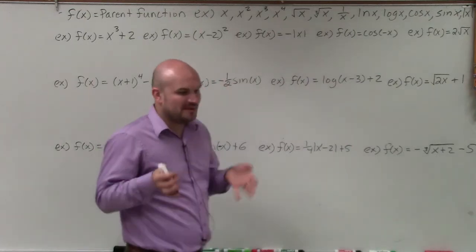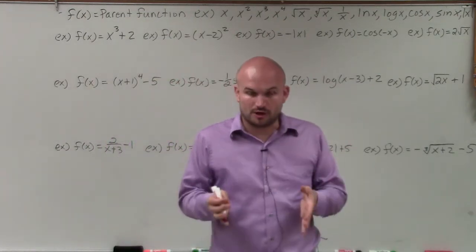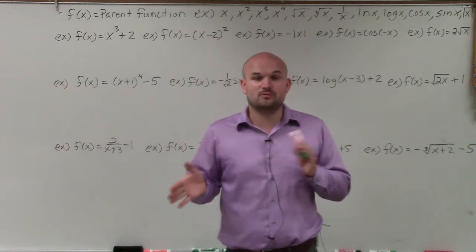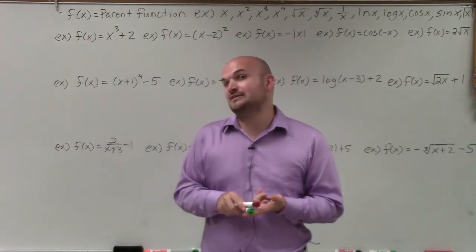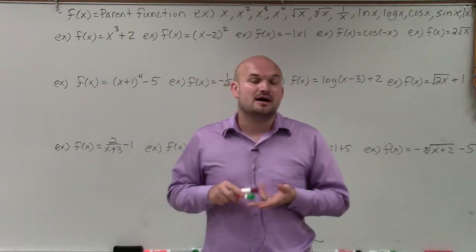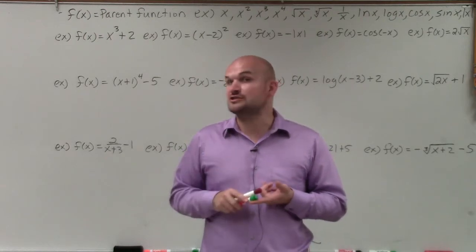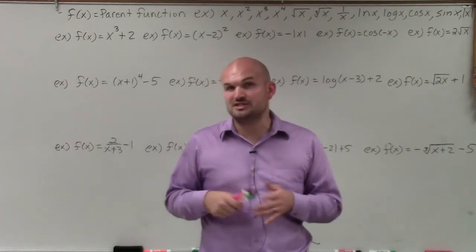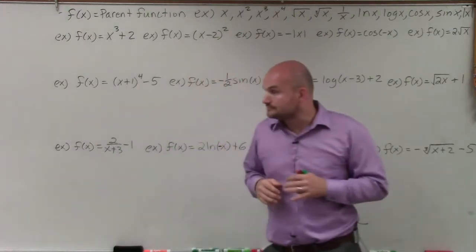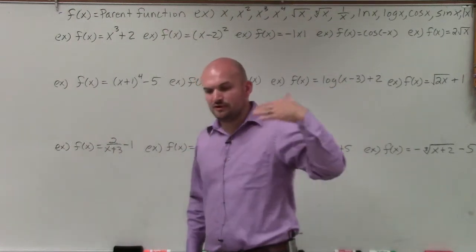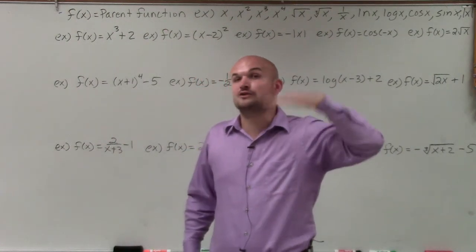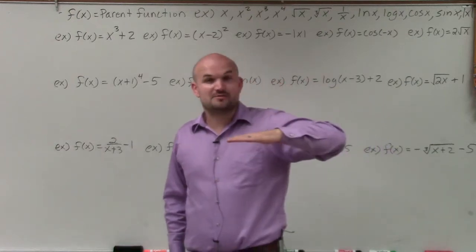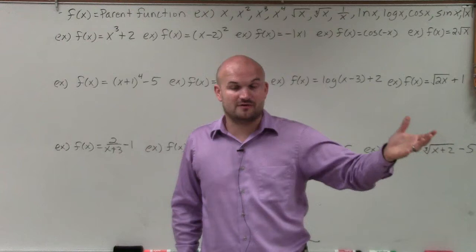Basically, if you remember from our last video, depending on where the values are inside of our function, that determines what type of transformation we have. We could have a horizontal transformation, a vertical transformation, a reflection of the x-axis, a reflection of the y-axis, as well as compressions — either vertical or horizontal. Vertical transformations happen when we're adding or subtracting a value outside of the function. Horizontal transformations come when we're adding or subtracting a value inside of the function.